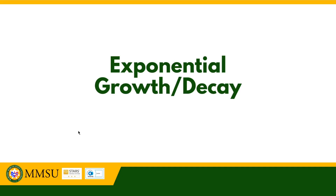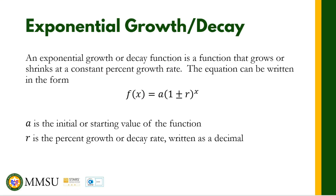Hello everybody and welcome back to our discussion on exponential functions. For this video I am going to talk about exponential growth or decay. Basically, an exponential growth or decay is a function that grows or shrinks at a constant percent rate. The equation can be written in the form f(x) = a(1 ± r) raised to x, where r is the percent growth or decay rate written as a decimal.